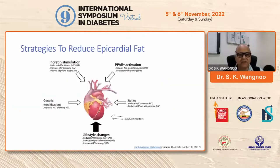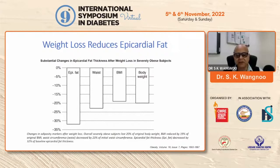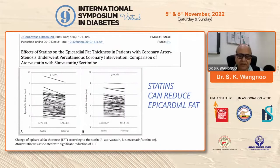Coming to the lifestyle and pharmacological interventions: strategies to reduce epicardial fat start from lifestyle changes. It has been shown beautifully that changes in adiposity markers occur after weight loss — severely obese subjects who lost 20% of original body weight saw BMI reduced by 19%, waist circumference decreased by 23%, and epicardial fat thickness decreased by 32% of baseline epicardial fat thickness — simply through weight loss.